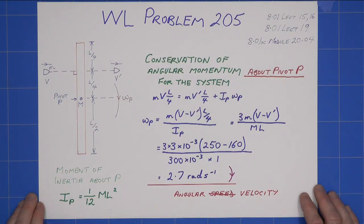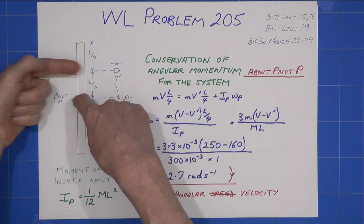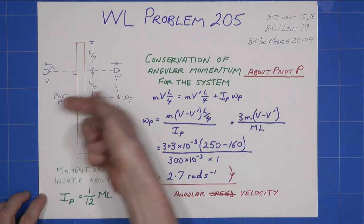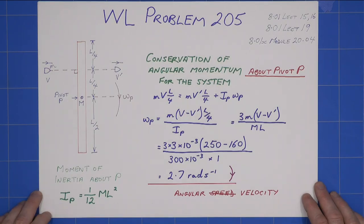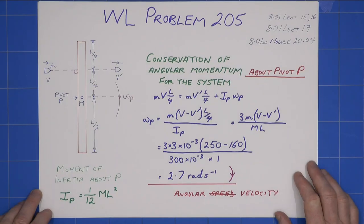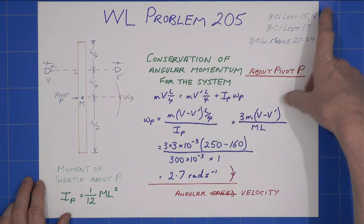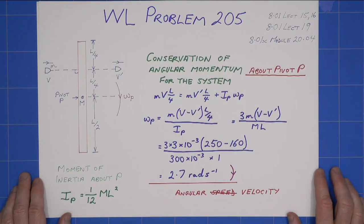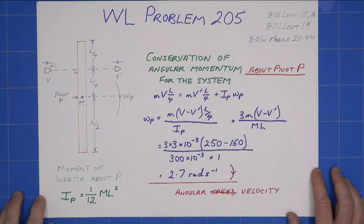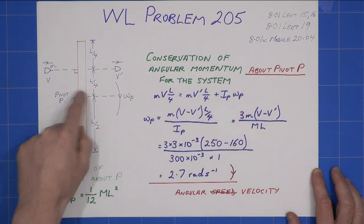We can't use conservation of linear momentum because the pivot, as the bullet strikes the rod, will have a reaction. And we don't know what that is off the top of our head. We can't use conservation of energy, either, because this is an inelastic collision. If you're not sure about all of that, lecture 16 of 801 is where Walter Lewin deals with elastic and inelastic collisions. But we can use conservation of angular momentum.